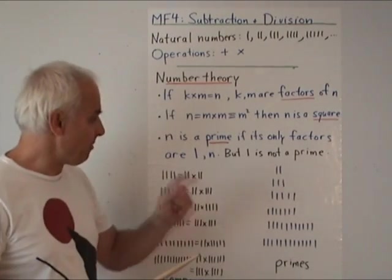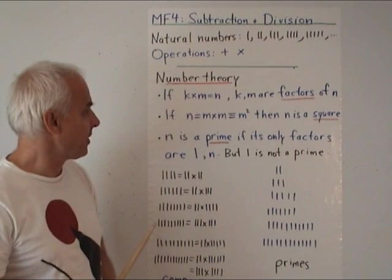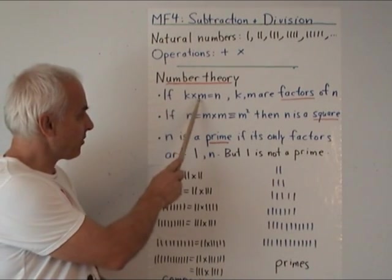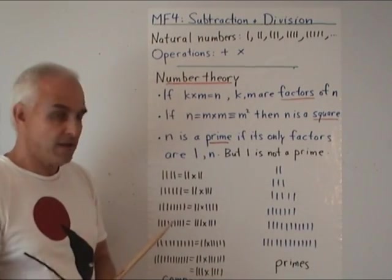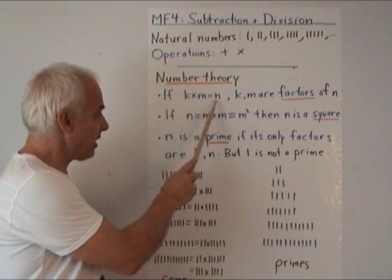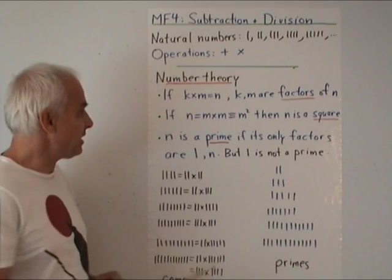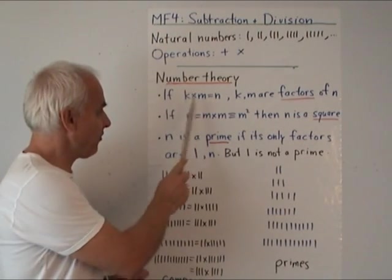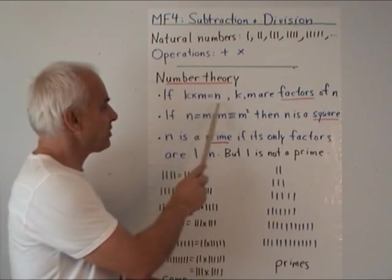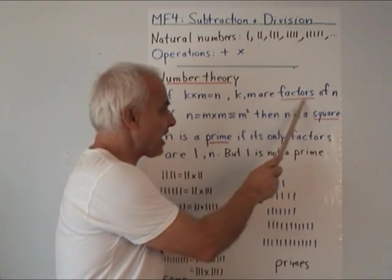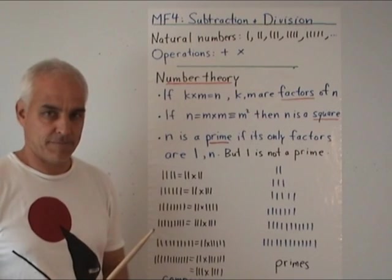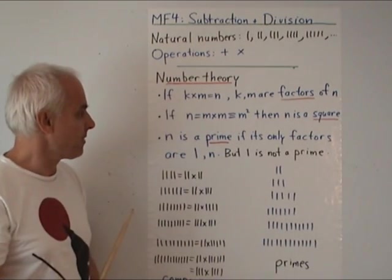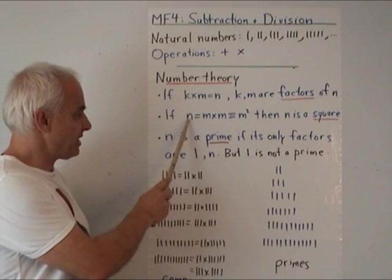Let's do a little bit of that because it will have some bearing on what comes afterwards. A few definitions: suppose that we have three numbers K, M, and N, and K times M equals N. That means that N is K groups of M. In such a case we say that K and M are factors of N.